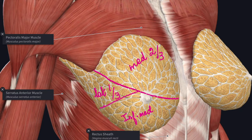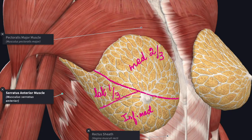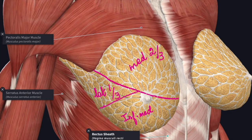The base of the gland rests upon the following structures: the pectoralis major in the medial two-thirds, serratus anterior in the lateral one-third, and the external oblique aponeurosis in the inferomedial quadrant. This separates the mammary gland from the rectus abdominis muscle.